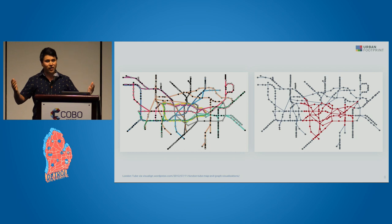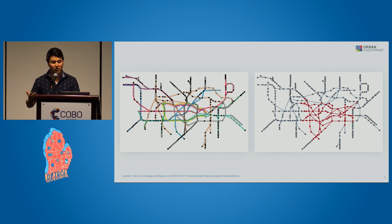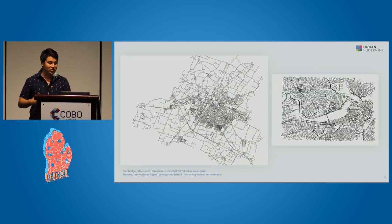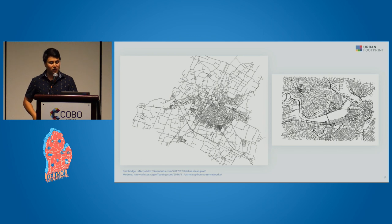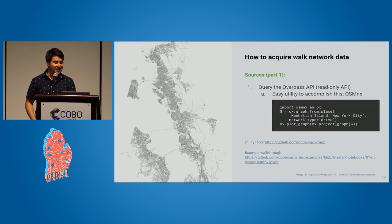You see graphs every day. Here's a transit network — this is the London Tube, and it's also a graph. In OSM's example, here's a city in Italy and also Cambridge in Boston — both of those are graphs. Everything is a graph.